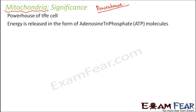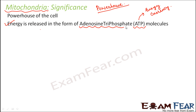Mitochondria release energy in the form of ATP — adenosine triphosphate molecules. ATP is the energy currency of our body. Just as you need currency to buy things, the cell uses ATP to measure and exchange energy. We talk about production of energy inside the cell in terms of the number of ATP molecules produced or utilized in a particular process.